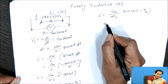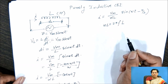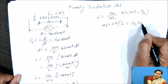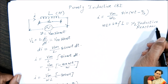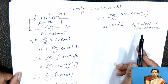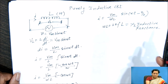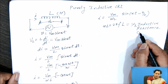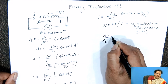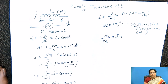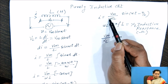Here ωL is equal to ω = 2πf into L, equal to XL. This is the inductive reactance. This term XL is called inductive reactance — that is the opposition of the inductor for change in current, which is measured in ohms. So we can write down Vm/XL as Im, the maximum current. So Im equal to Vm/XL.